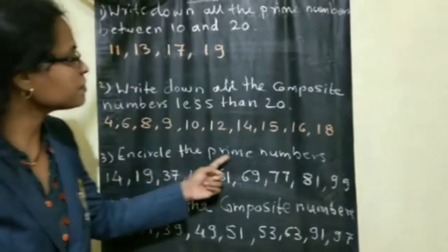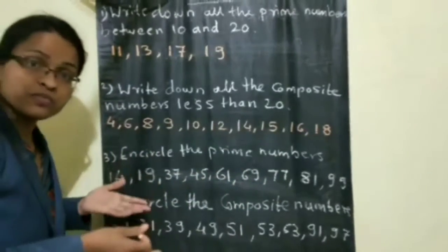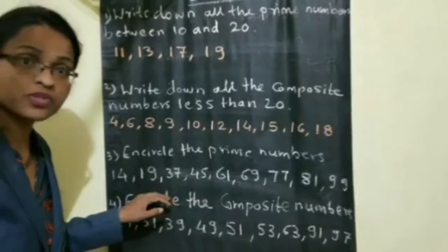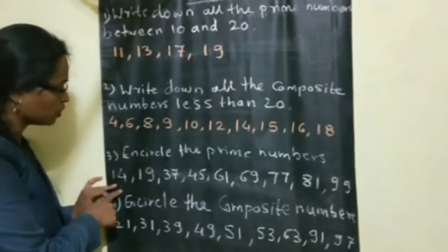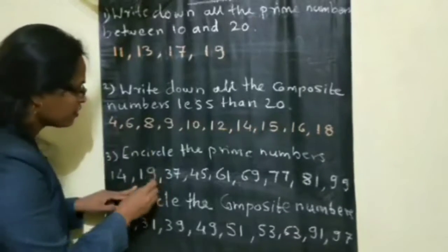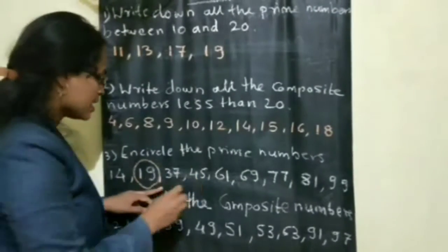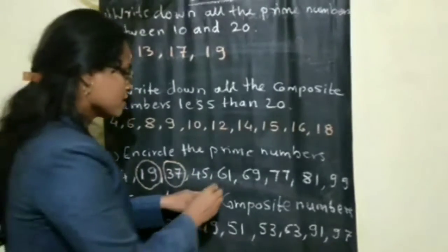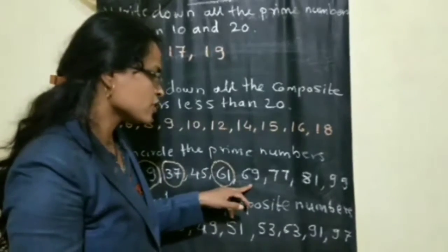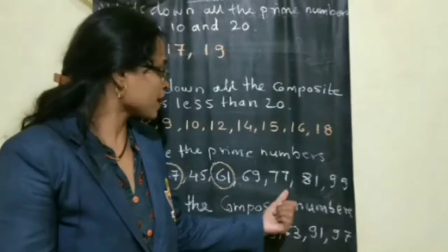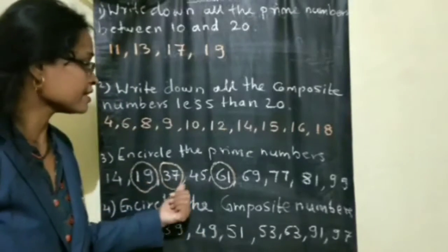Next question: circle the prime numbers from the given group of numbers. We have to observe and find out which are the prime numbers. 14 is not a prime number. 19 is a prime number — yes — because it has only 2 factors: 1 and the number itself. 37 is a prime number. 61 is a prime number. 45, 69, 77, 81, and 99 are not prime numbers. So only three prime numbers are there: 19, 37, and 61.